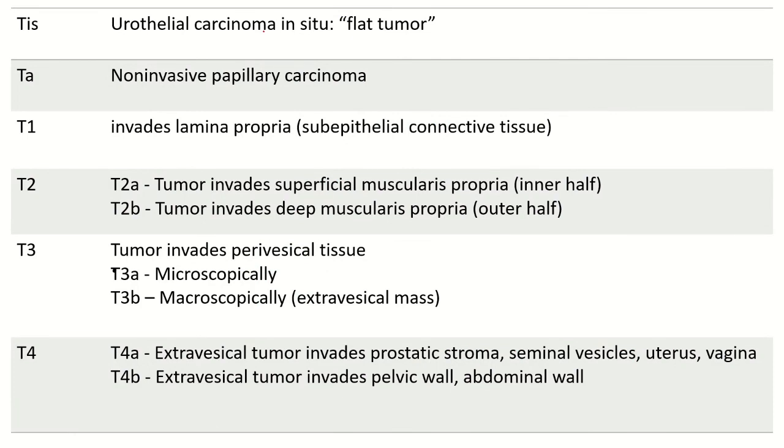TIS is urothelial carcinoma in situ, which is a flat tumor. TA is non-invasive papillary carcinoma. T1 is limited to lamina propria. T2 is muscularis propria—detrusor inner half and outer half. T3 is perivesical tissue. T4 is extravesical tissue.